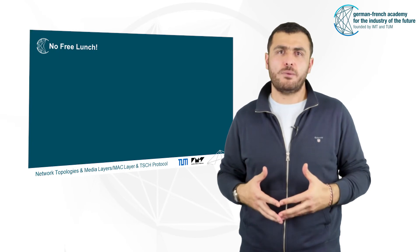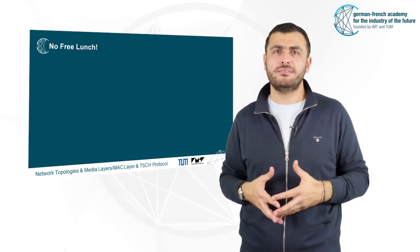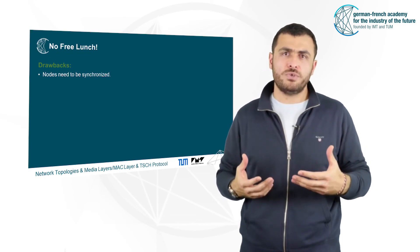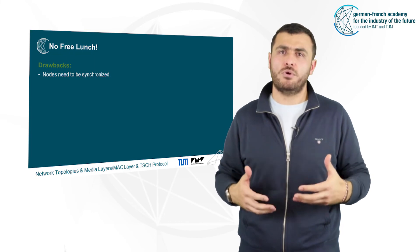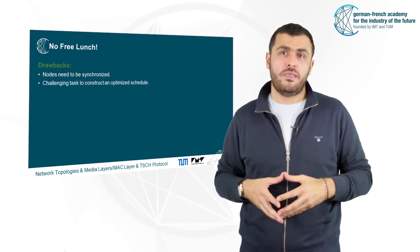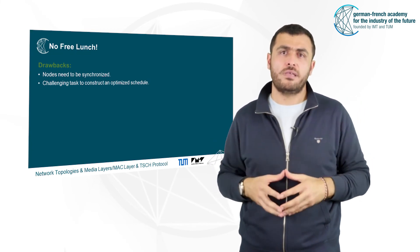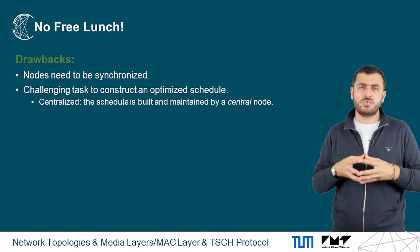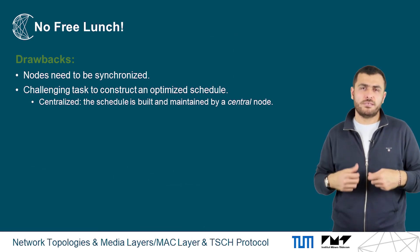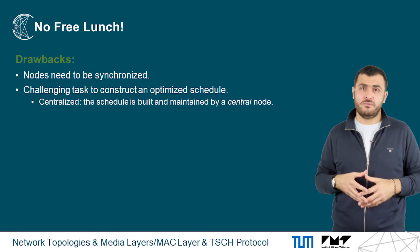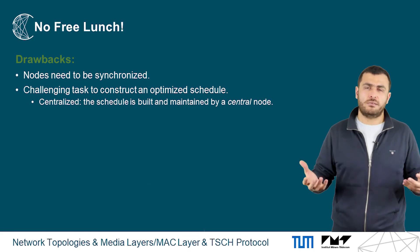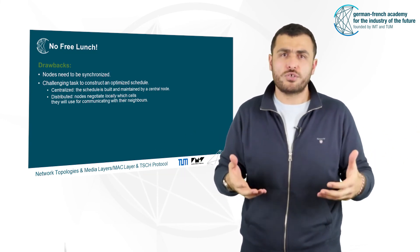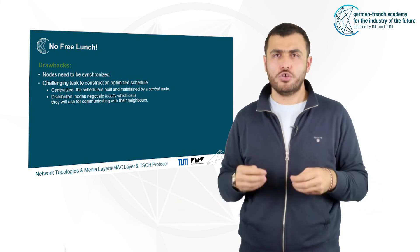TSCH is thus very efficient because it avoids collisions and allows predicting the delay to access the channel. However, there are downsides. Nodes need to be synchronized, which is not always straightforward and may be costly in time and energy. The schedule — the way the slot frame is defined — may be hard to construct if the network has variable traffic or dynamic topology. Whether the schedule is built by a central node and distributed, or negotiated directly between neighbors, no solution comes for free.